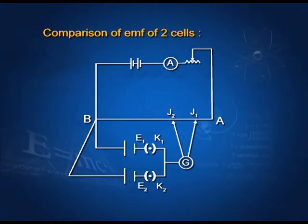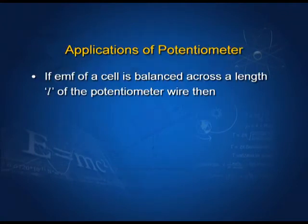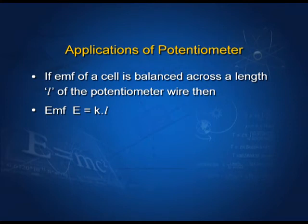Here is a diagram for the situation. If the EMF of the cell is balanced across the length L of the potentiometer, then E = K·L, where K is the potential gradient.